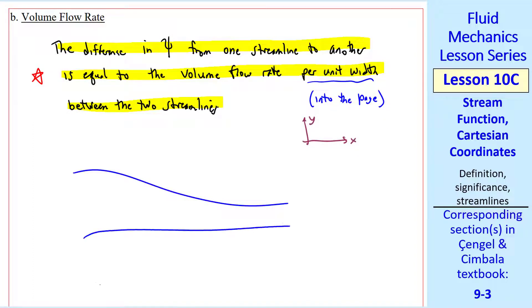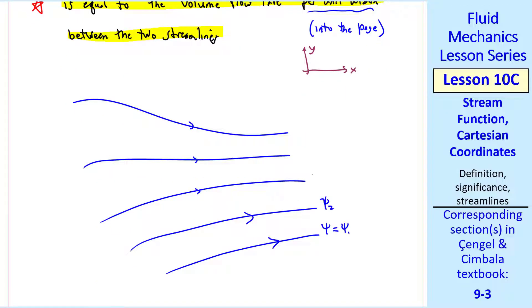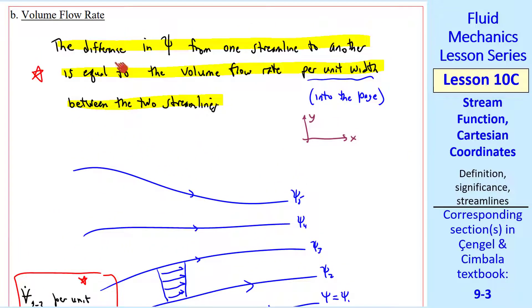Again, qualitatively, if we have a bunch of streamlines, where psi is psi 1, psi 2, etc., and we plot a velocity profile between any two streamlines, here I chose psi 2 and psi 3. So the volume flow rate between psi 2 and psi 3 per unit depth is simply equal to psi 3 minus psi 2. Again, based on this statement up here.